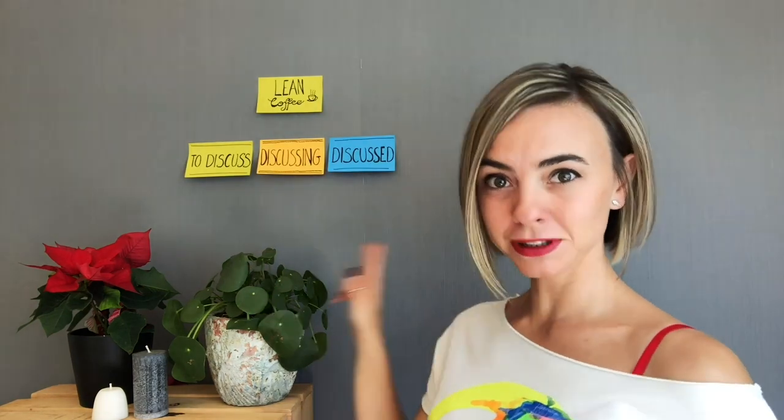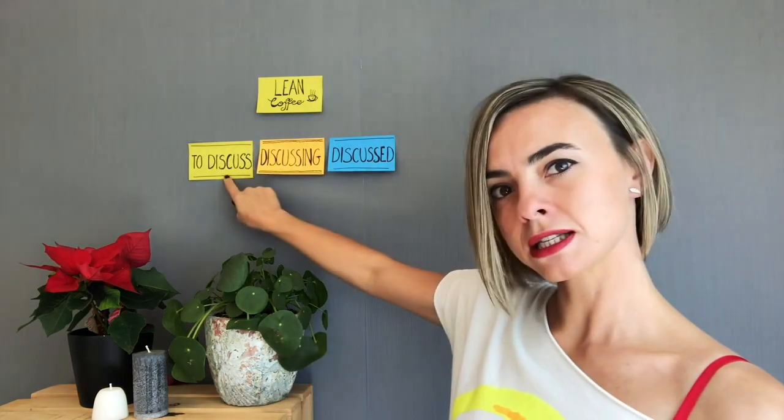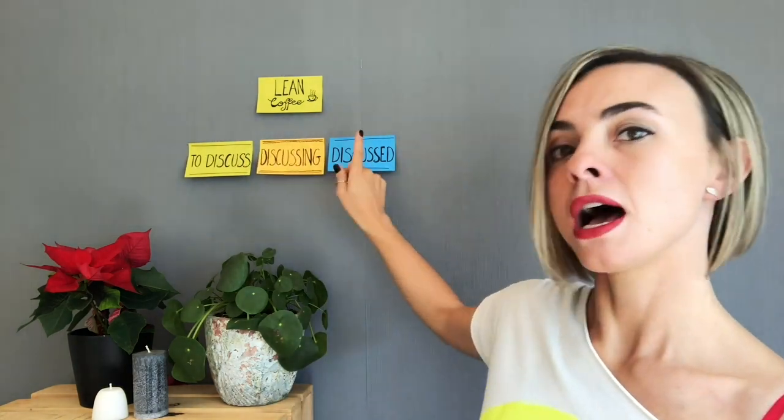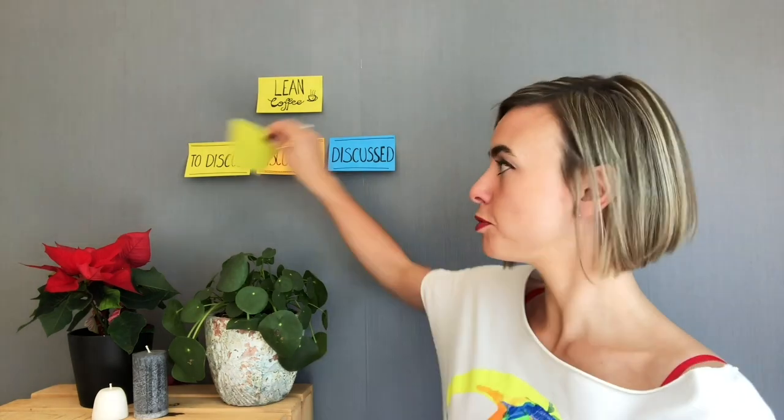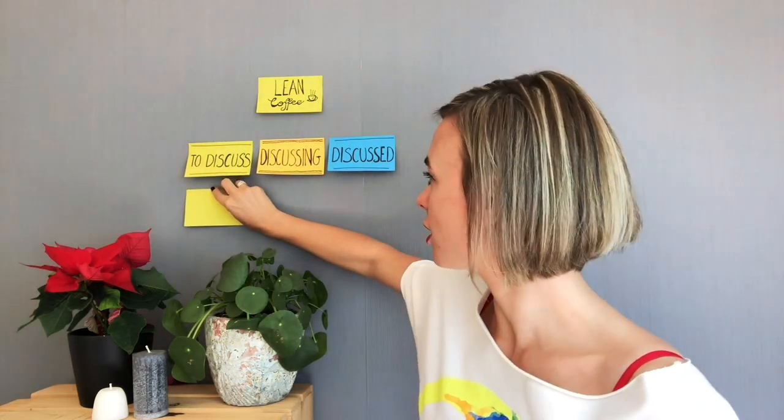What you need are some pens, sticky notes, and a timer — for which a smartphone can do — and a wall, physical or virtual depending on how you conduct your meeting. Then you draw a simple Kanban board on the wall with three columns: to discuss, discussing, and discussed. Then you gather the topics that are up for discussion from all the participants. They write them on the post-its and put them in the to discuss column.